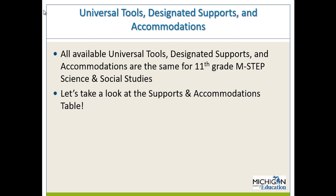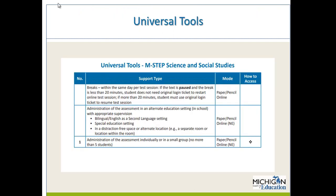For students taking the 11th grade M-STEP Science and Social Studies test, all universal tools, designated supports, and accommodations are the same. Looking at the first page of universal tools for M-STEP Science and Social Studies: breaks are allowed, administration in an alternate education setting with appropriate supervision is allowed, and the assessment may be administered individually or in a small group. For example, a group of students needing oral translation into the same language could be grouped together.